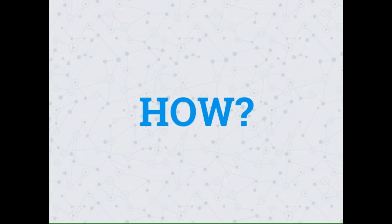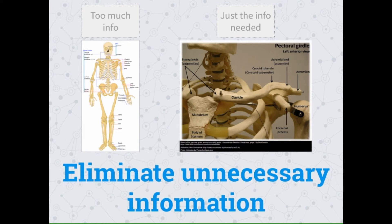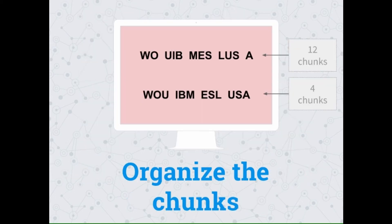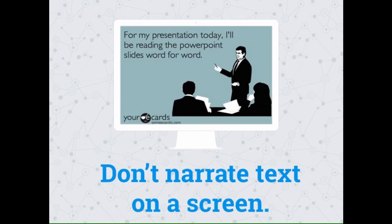How do we do this in instructional design? We want to eliminate unnecessary information. If we want to teach the clavicle, we're not going to show a full skeleton with all parts labeled — we'll focus in on a piece of the skeleton with labels nice and clear. We can help learners by organizing chunks of information, making them more easily processed by working memory. When narrating a presentation, don't read the information on the screen, because the brain is trying to process both what it's seeing and what it's hearing, and if they're not aligned, the brain struggles.